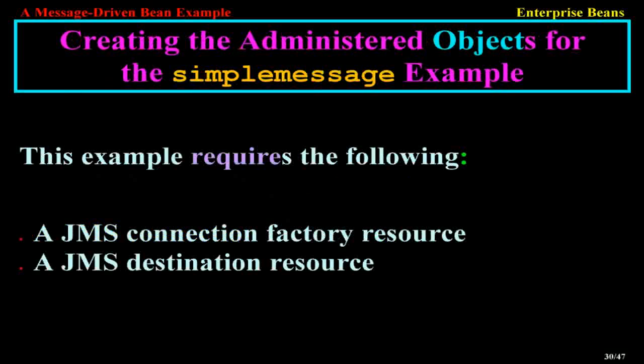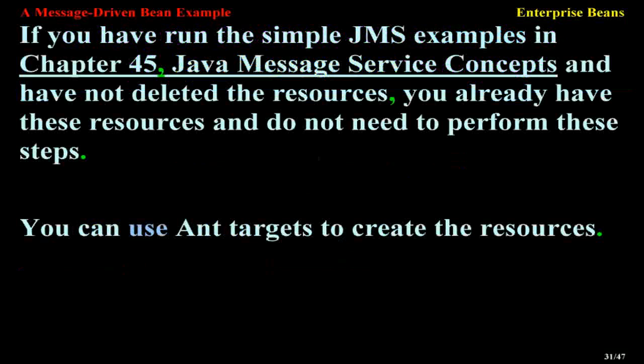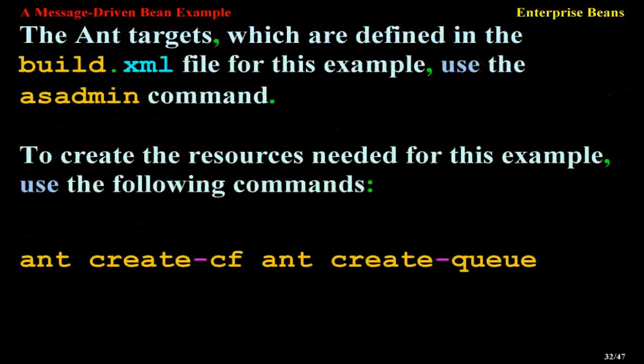Creating the administered objects for the simple message example. This example requires a JMS connection factory resource and a JMS destination resource. If you have already run the simple JMS examples in Chapter 45 and have not deleted those resources, you do not need to perform these steps. You can use ant targets to create the resources. The ant targets, defined in the build.xml file for this example, use admin commands. Use the following commands: ant create-cf and create-q.